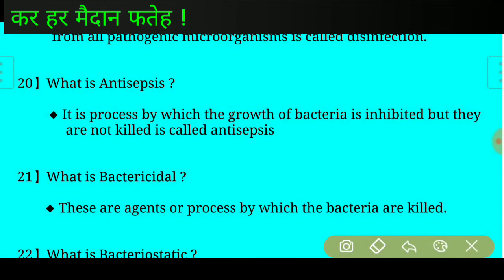Question number twenty: What is antisepsis? Answer: It is the process by which the growth of bacteria is inhibited but they are not killed. This is called antisepsis.